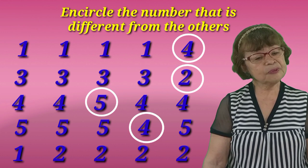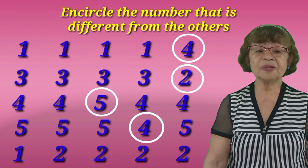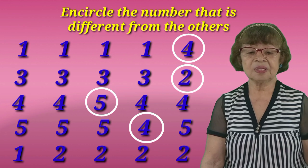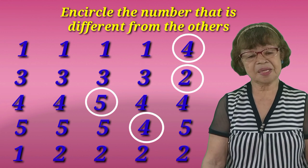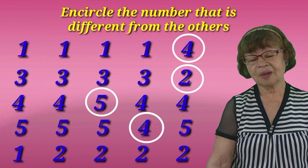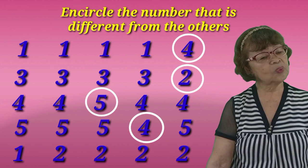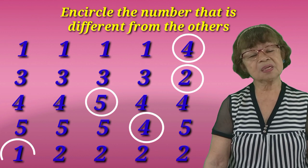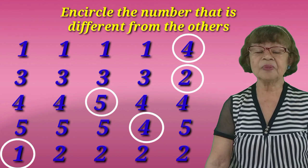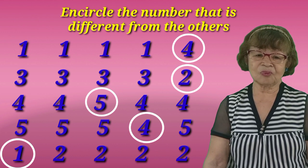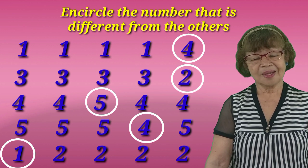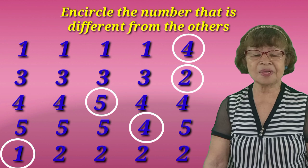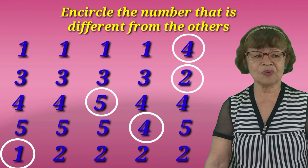The fifth row is number 1, number 2, number 2, number 2, number 2, number 2. What is the number that is different from number 2? It is number 1. So we're going to circle number 1 because it is different from number 2. We finished it now! You know your numbers from one to five!